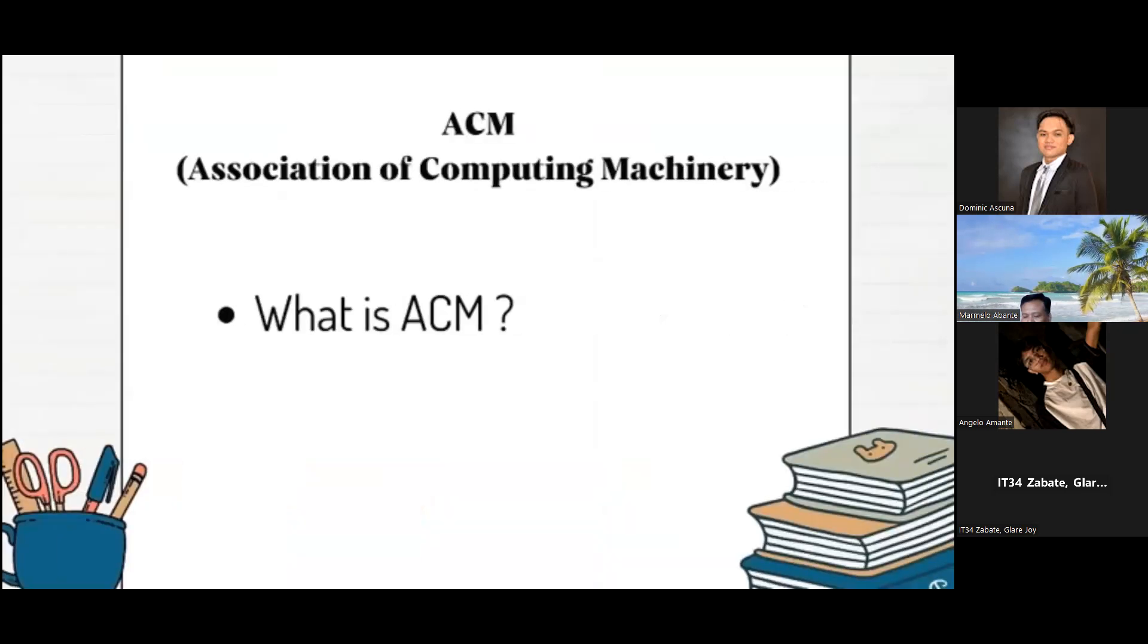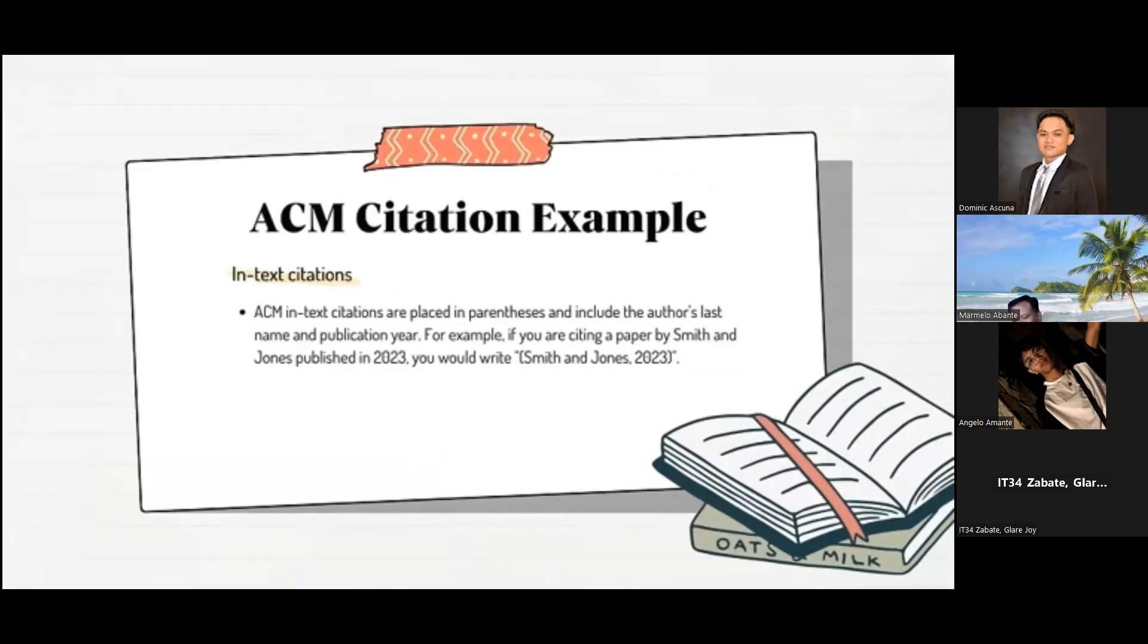That's all for my part, thank you. Good day everyone. My name is Angelo Amante and I will discuss ACM. ACM reference style is a set of guidelines for formatting citations and references in academic papers published by the Association for Computing Machinery. It is widely used in computer science, information technology, and other related fields. ACM in-text citations are placed in parentheses and include the author's last name and publication year. For example, if you are citing a paper by Smith and Jones published in 2023, you would write Smith and Jones, 2023.